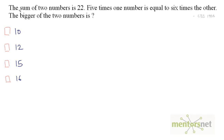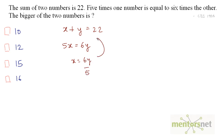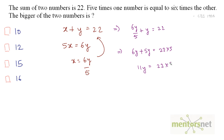Let the numbers be x and y. The sum of these two numbers is 22, so x plus y equals 22. It is given that 5 times one number equals 6 times the other, so 5x equals 6y. Substituting x equals 6y by 5: we get 6y by 5 plus y equals 22, which gives 6y plus 5y equals 22 times 5, so 11y equals 110, therefore y equals 10.